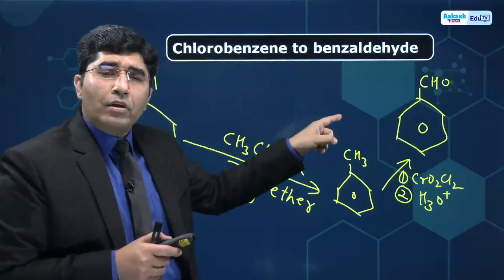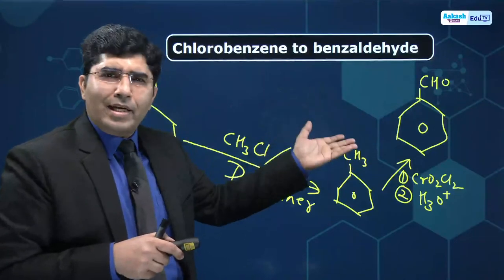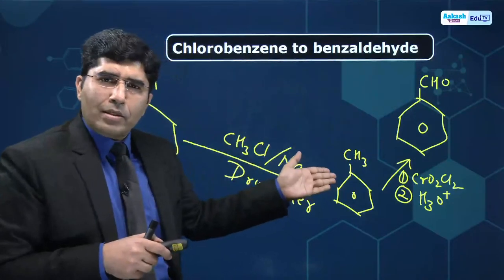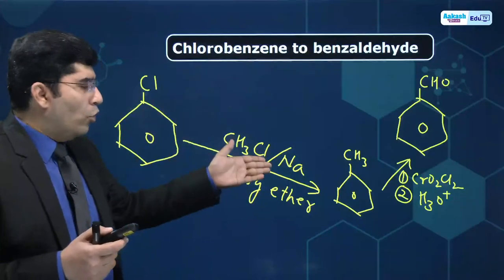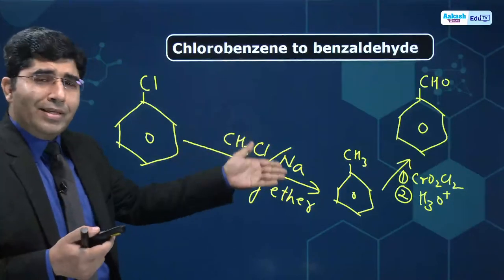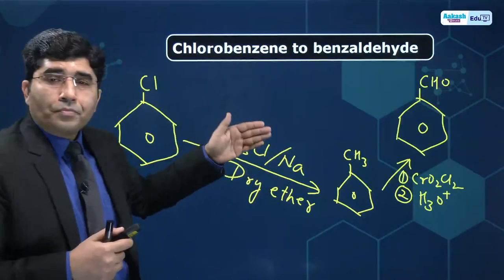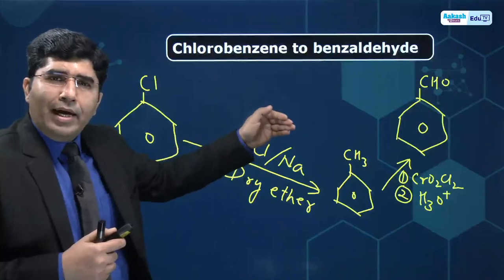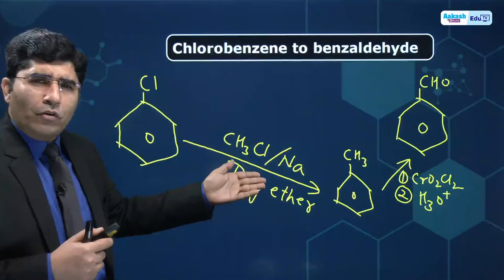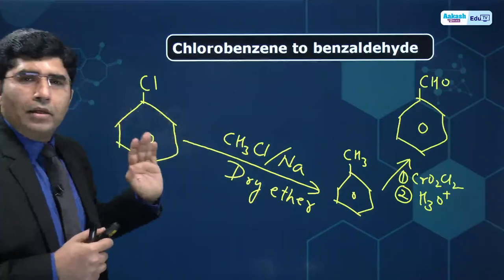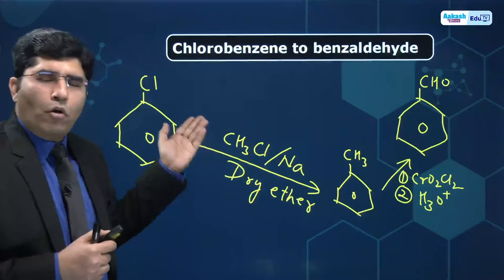The three methods to prepare benzaldehyde from toluene are: first, Etard reaction; second, chlorination and then hydrolysis in boiling water; third, reaction with acetic anhydride then hydrolyze. You can also make it from benzene. If we prepare benzene to benzaldehyde by Gattermann-Koch reaction, then we have to first convert chlorobenzene to benzene — which we already know how to do.